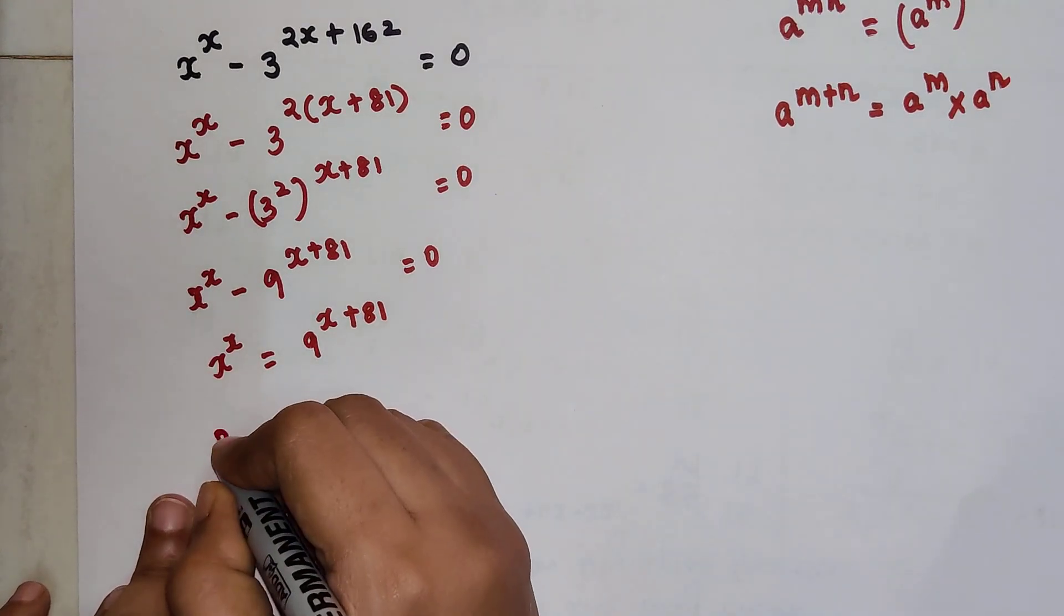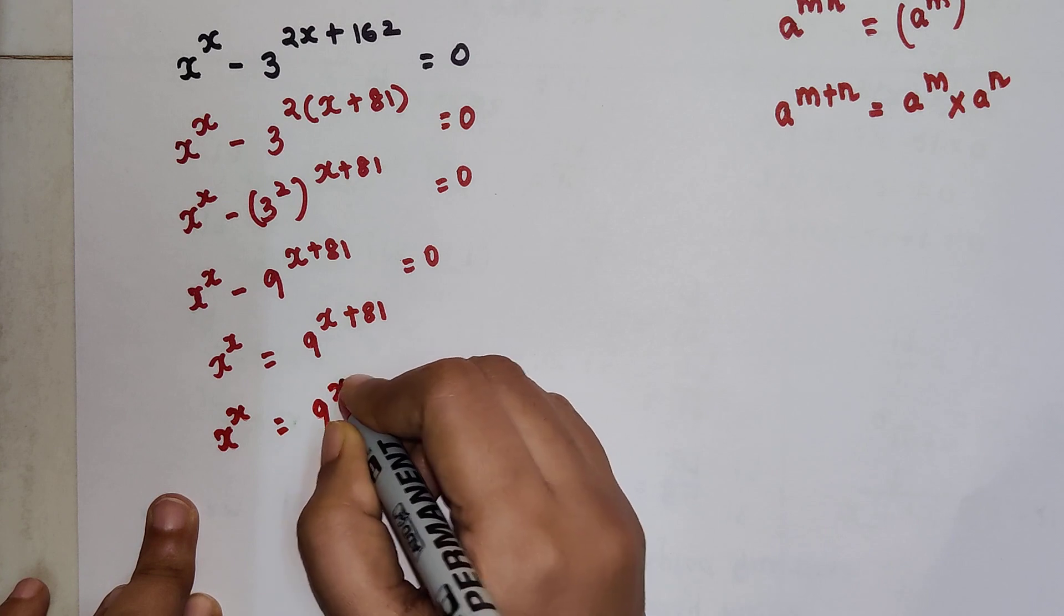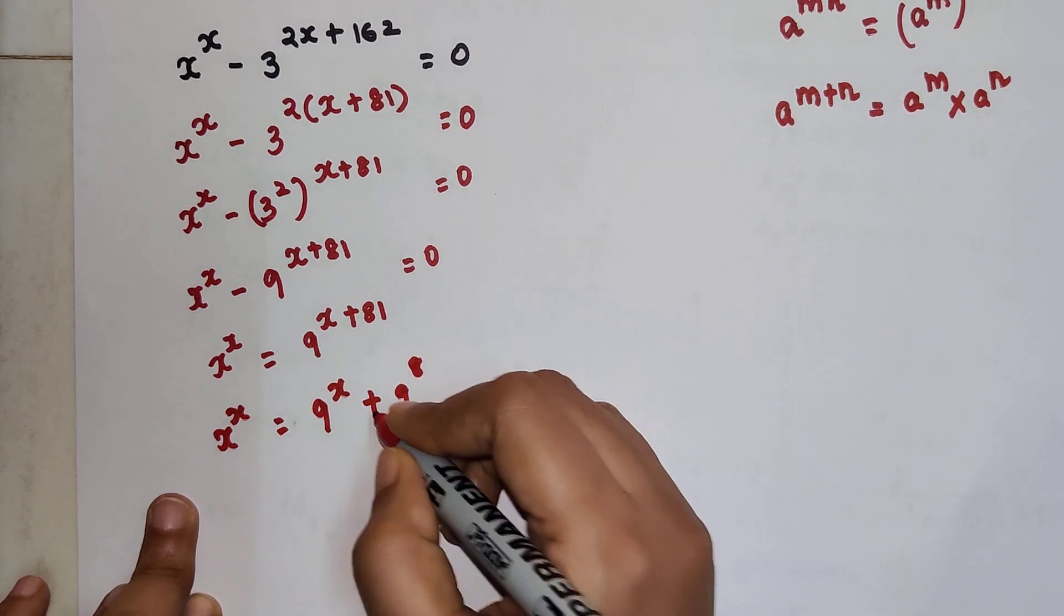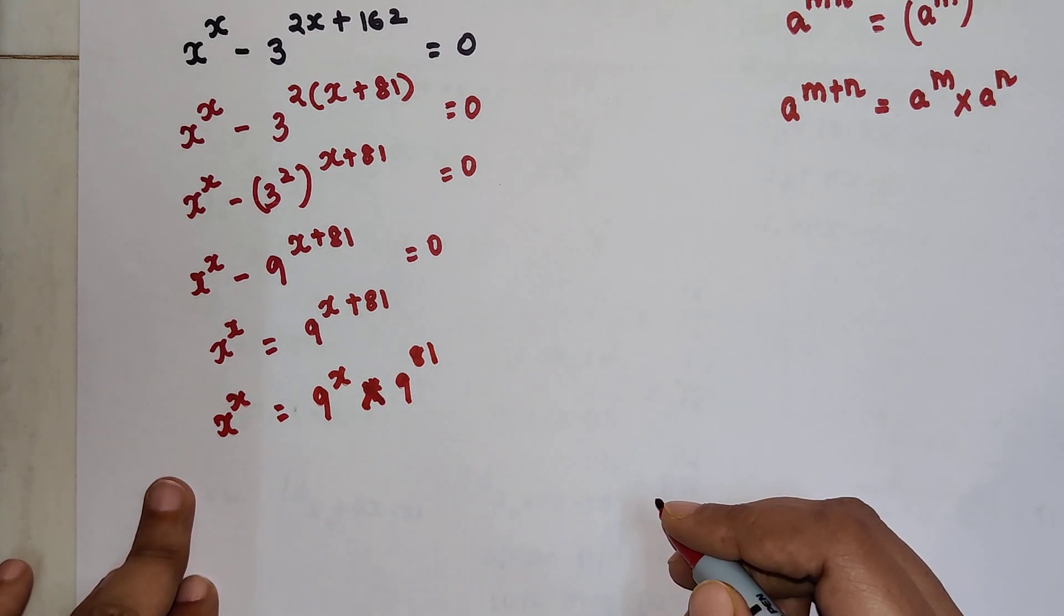So here also I can write this as x raised to x equals 9 raised to x times 9 raised to 81.